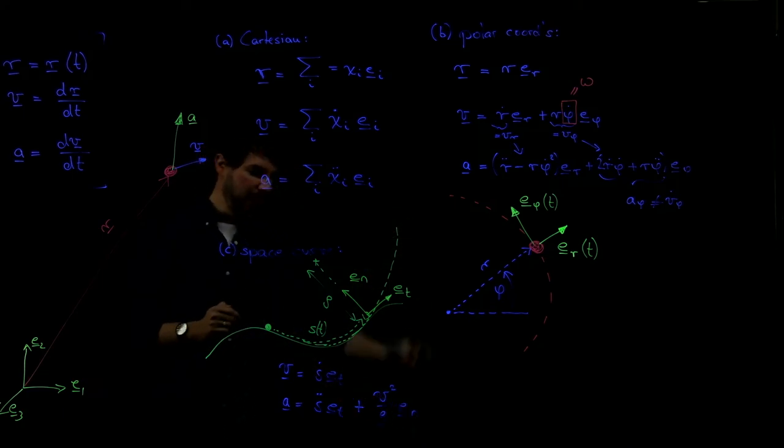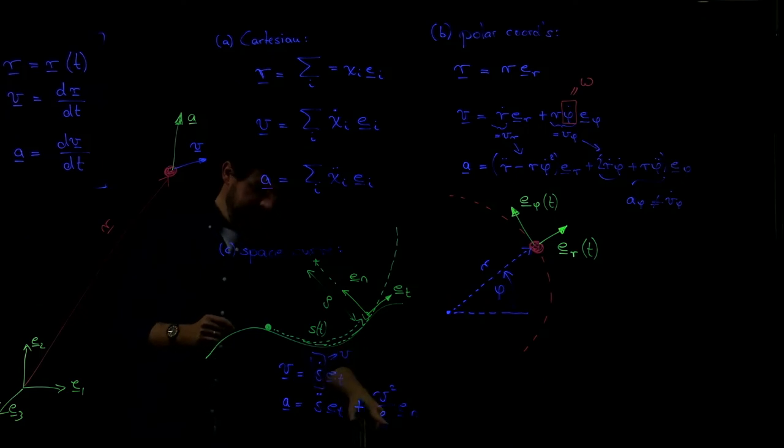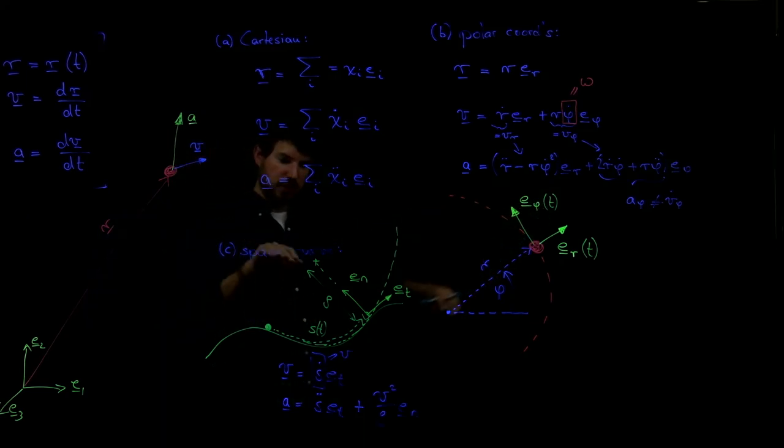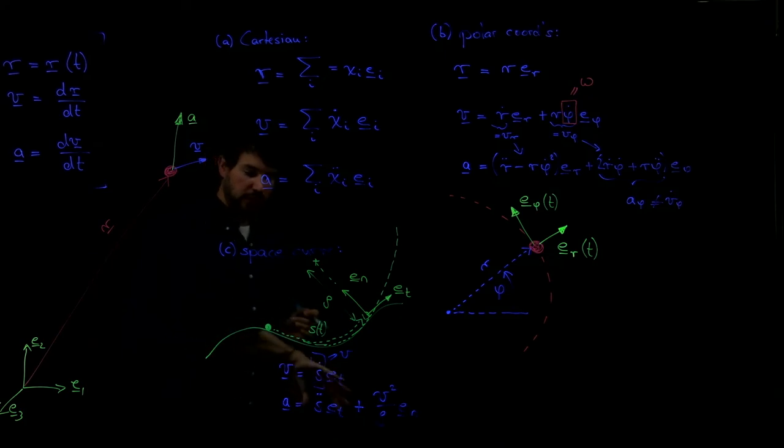And the second one is plus v squared divided by rho times en. And this second one here means that there is also a normal component of the acceleration. So if you're moving along a curved path, this one will be there. It depends quadratically on your speed, where v is nothing else but my s dot. And it depends inversely on rho. This is the radius of curvature. So if you're on a flat ground, the radius of curvature goes to infinity, and you would not see that term. You would only have the first one.